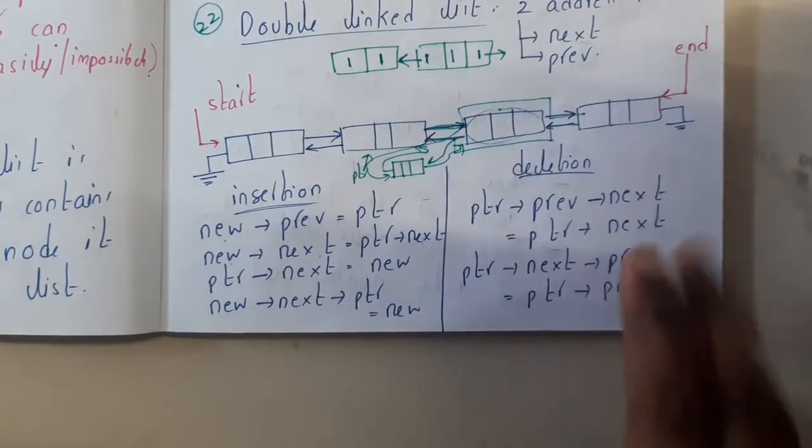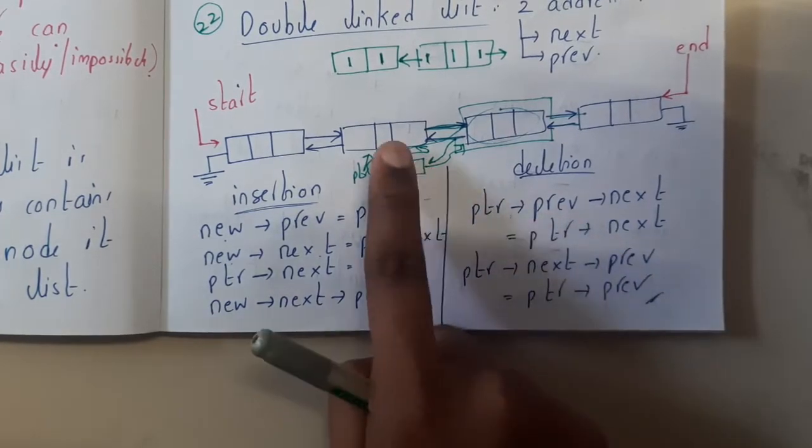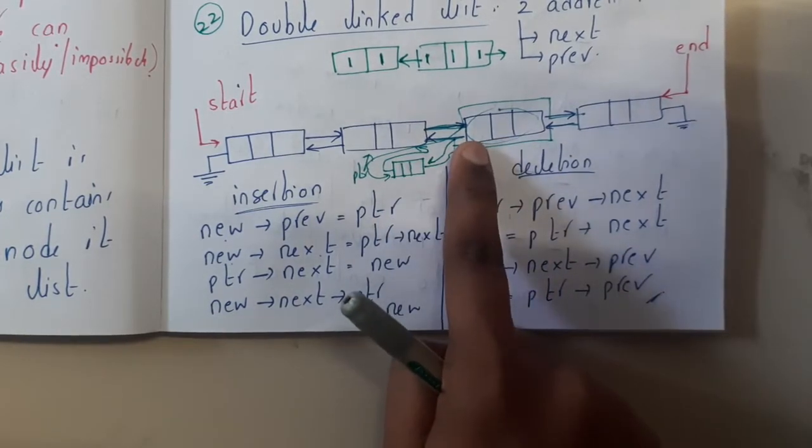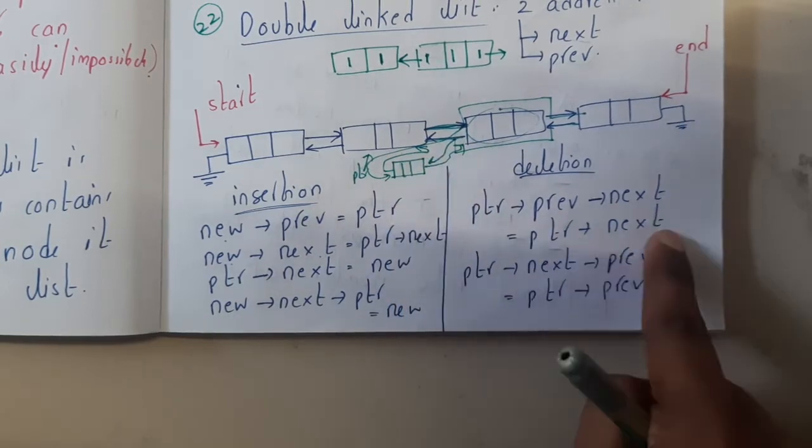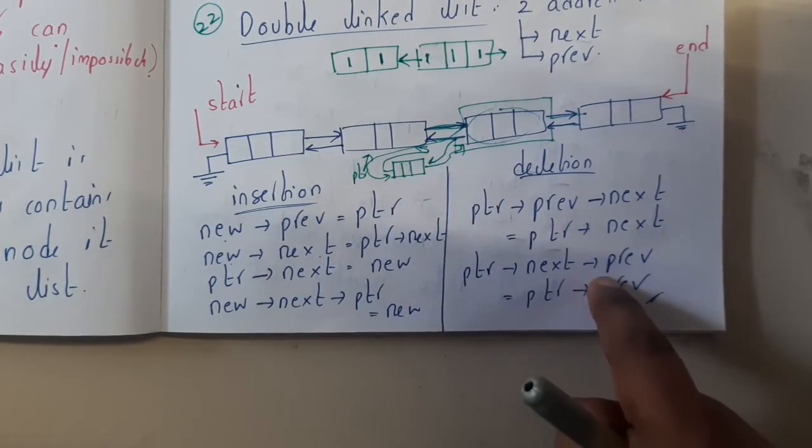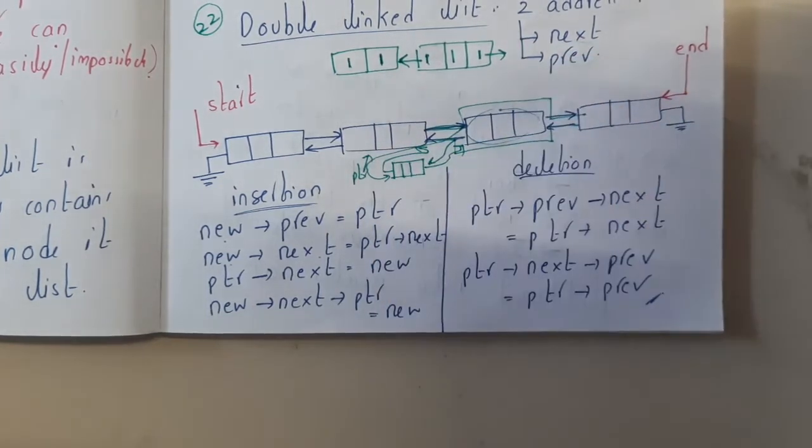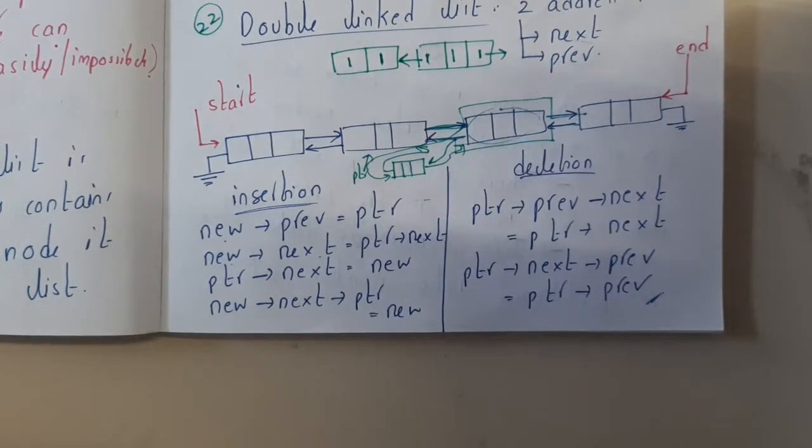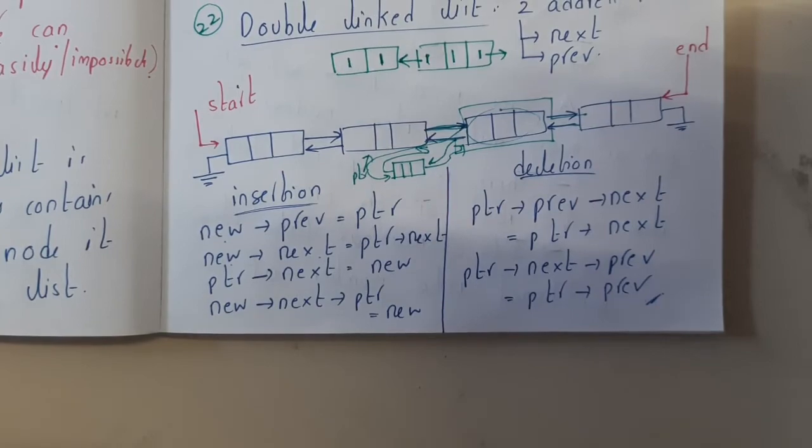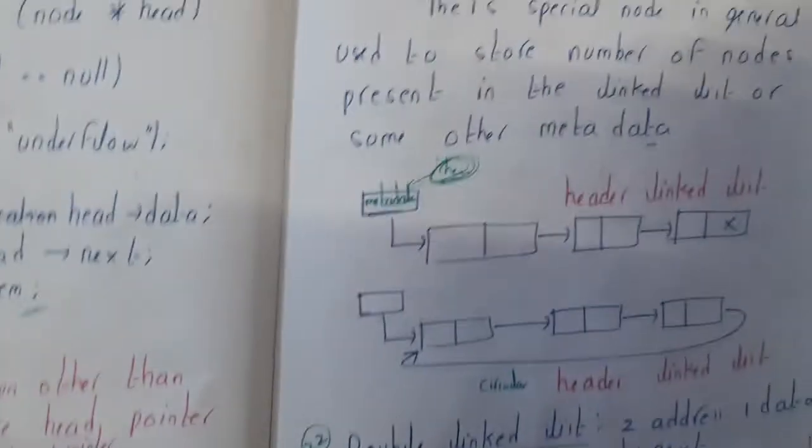Hence, that element is free. ptr's previous next is equal to ptr's next, and ptr's next previous is equal to ptr's previous. So just by modifying those values, you can get the deletion of a particular element. I hope you got some basic idea about this concept of doubly linked list.